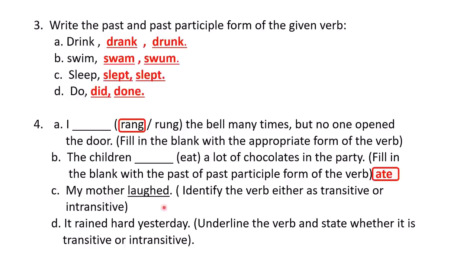C: 'My mother laughed.' Identify the verb as transitive or intransitive. If the verb is followed by an object it becomes transitive; if not, it is intransitive. Here, 'my mother laughed' has no object, so the answer is intransitive verb. If the sentence were 'my mother laughed at the children,' then with the object 'the children,' it would have been a transitive verb.